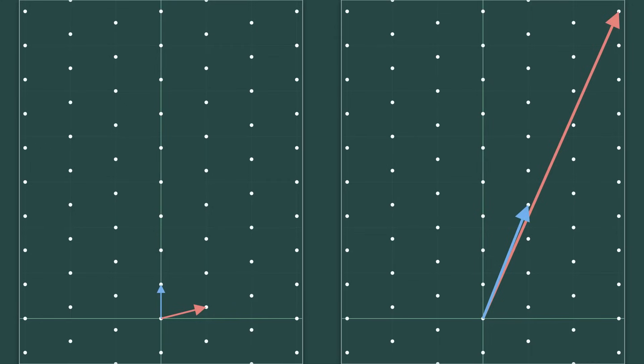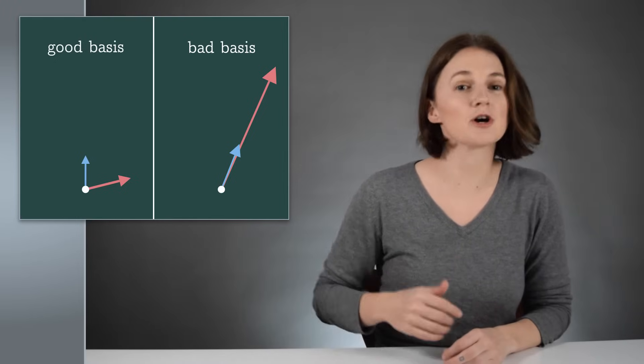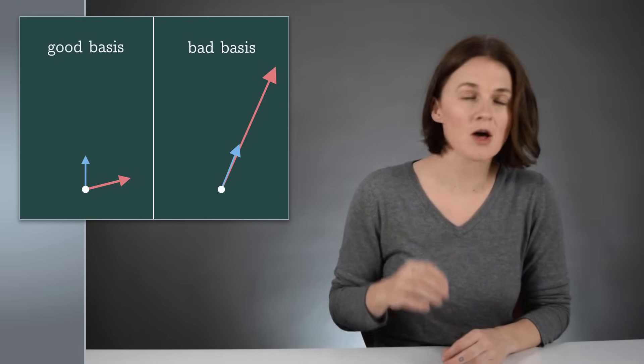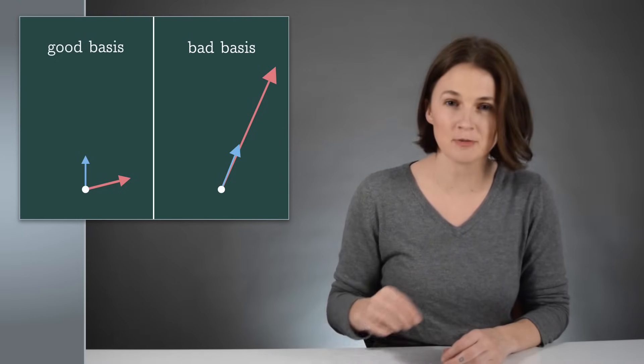In one basis, the vectors are close to perpendicular. We're going to call that a good basis. In the other basis, the vectors are much closer to parallel. We're going to call that a bad basis. Here's a fact. The closest vector problem is much harder to solve with a bad basis than a good basis.